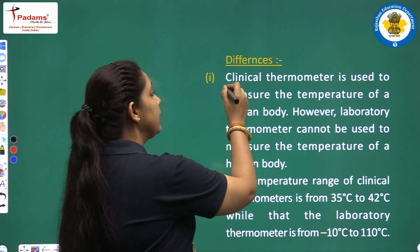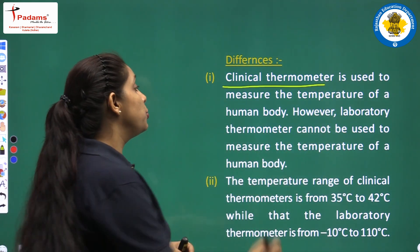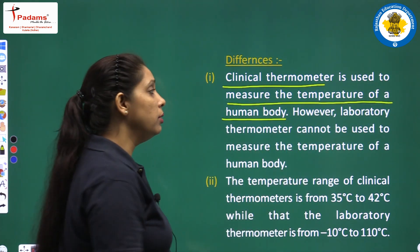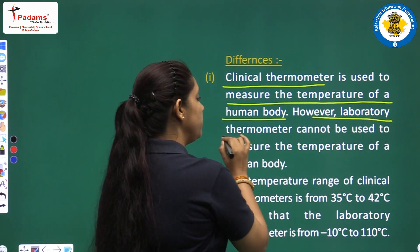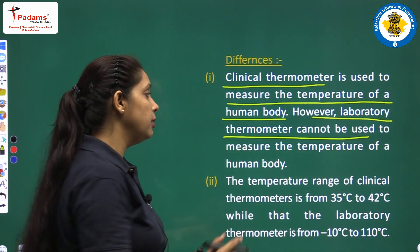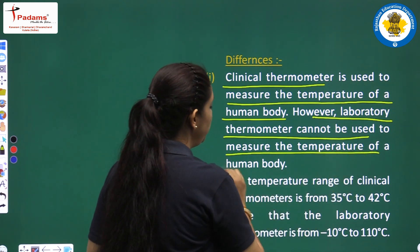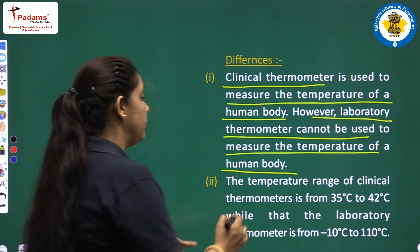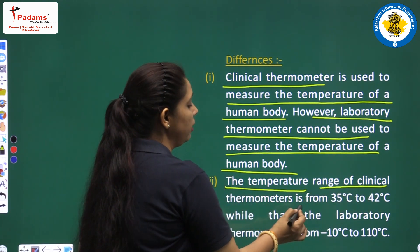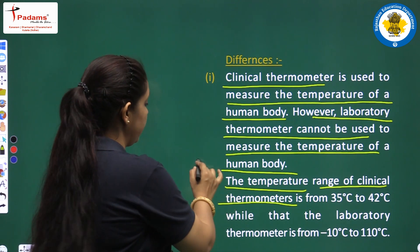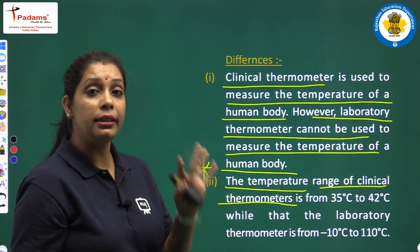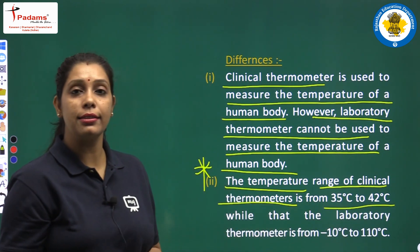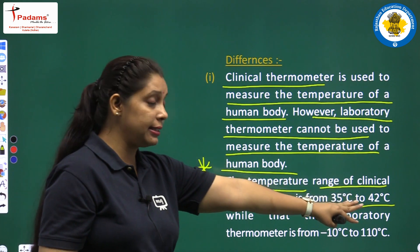We will write clinical thermometer is used to measure the temperature of a human body. However, laboratory thermometer cannot be used to measure the temperature of a human body. The temperature range of clinical thermometer is between 35 degrees Celsius to 42 degrees Celsius.